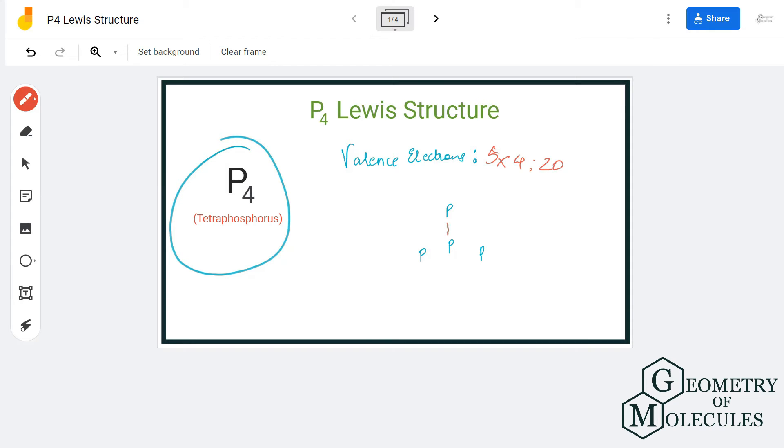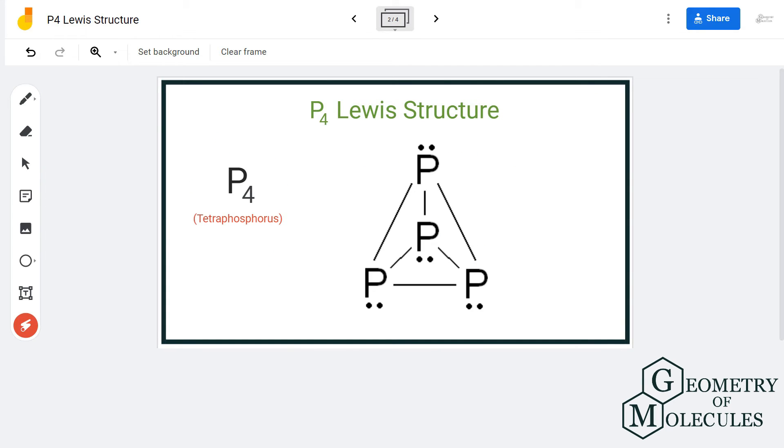So any single phosphorus atom you look at here will be forming bonds with three other phosphorus atoms. So we are already using up 12 valence electrons in bond formations, because each bond takes up two valence electrons each, and here a total of six bonds will be formed.